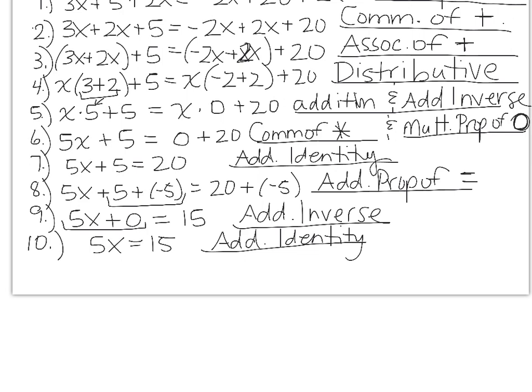Step eleven: 1/5 times 5x equals 15 times 1/5. Typically when we solve equations, we don't multiply both sides by a fraction, but from step ten to step eleven I multiplied both sides of the equation by 1/5. The reason is because it's the same as dividing by 5. That is the multiplication property of equality — we multiplied both sides by 1/5.